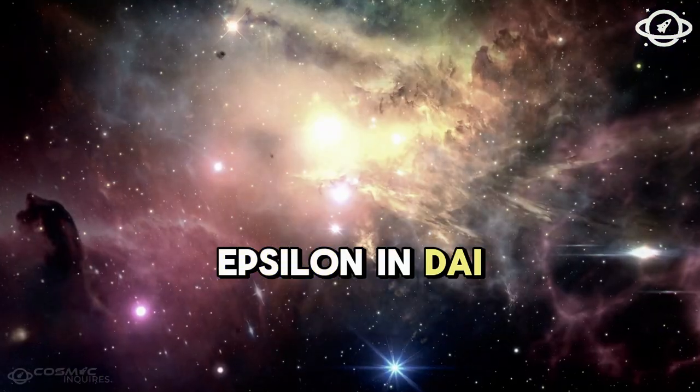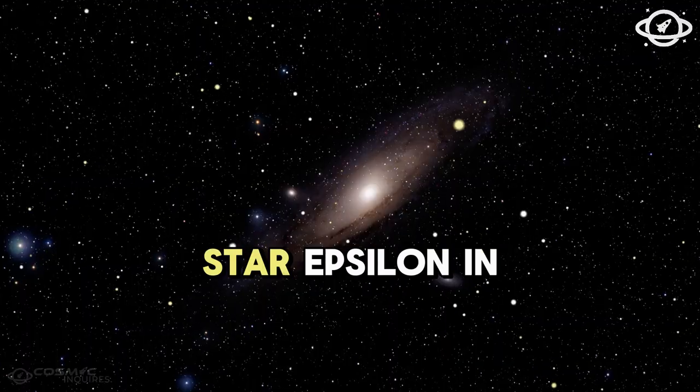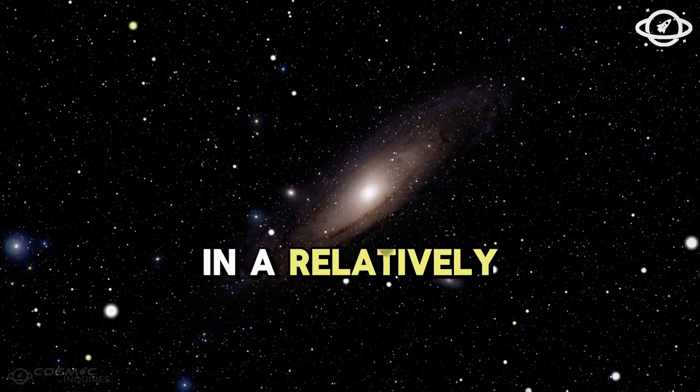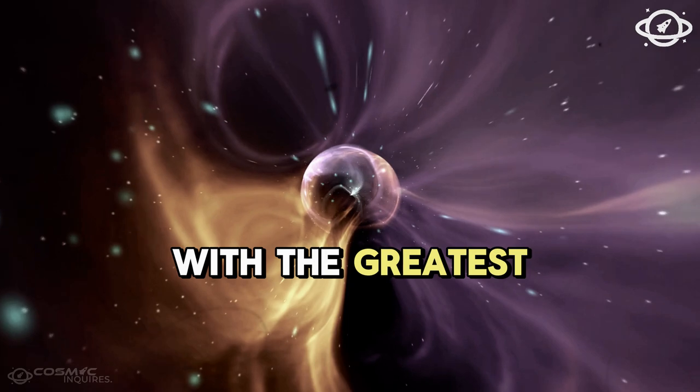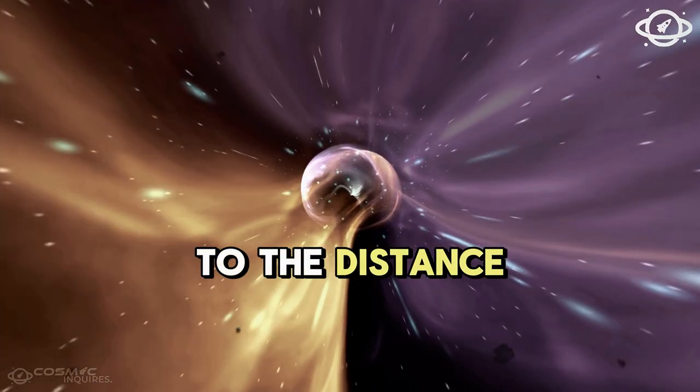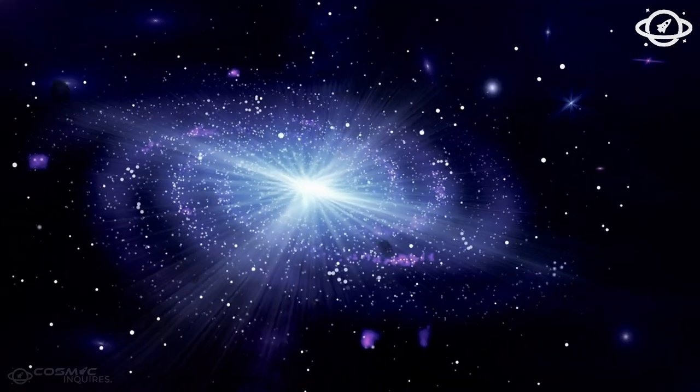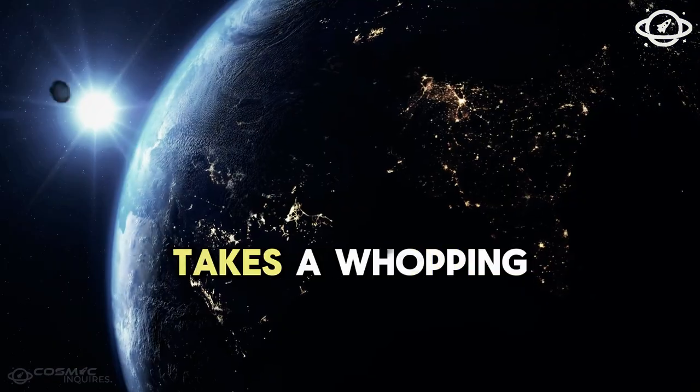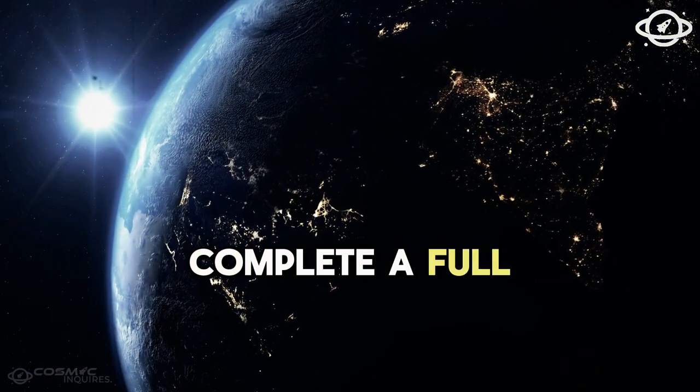Presenting Epsilon Indi AB, the extrasolar colossus orbits the main star Epsilon Indi in a relatively eccentric orbit, with the greatest distance corresponding approximately to the distance between the Sun and Neptune. As a result of this constellation, Super-Jupiter takes a whopping 200 years to complete a full orbit.